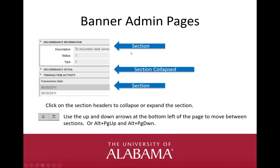For pages with multiple sections, sections can be expanded or collapsed by clicking on the section headers. Use the up and down arrows at the bottom left of the page to move between sections, or use the keyboard shortcuts Alt Page Up and Alt Page Down.